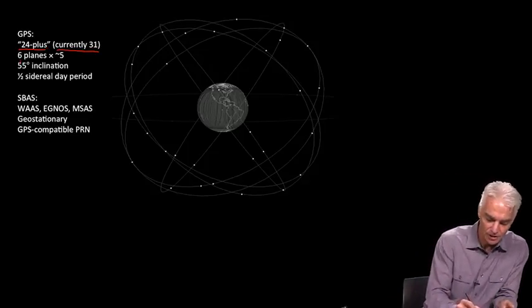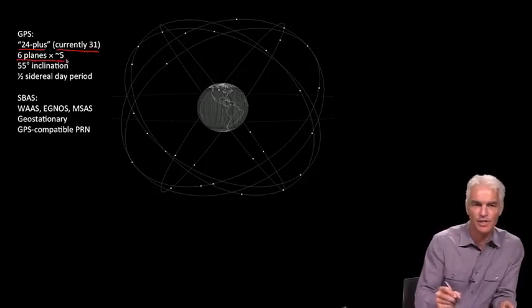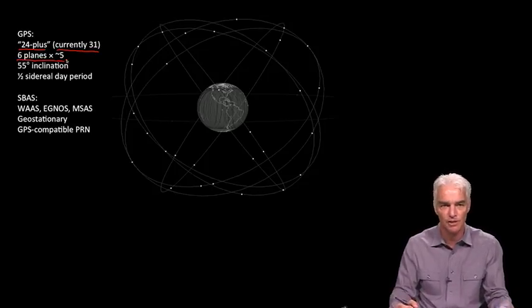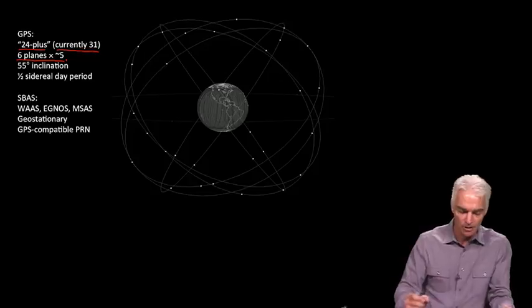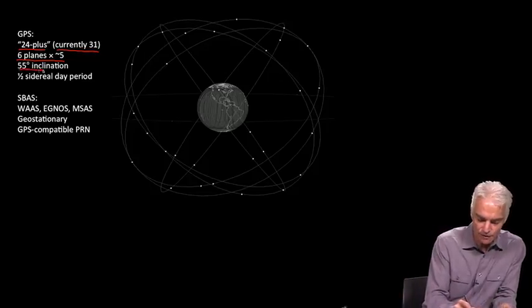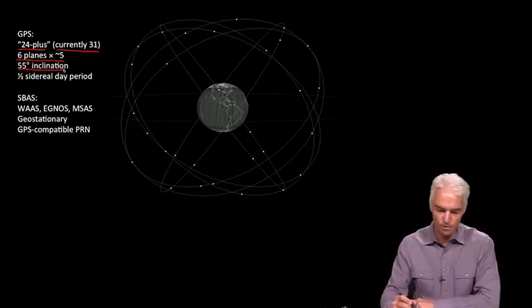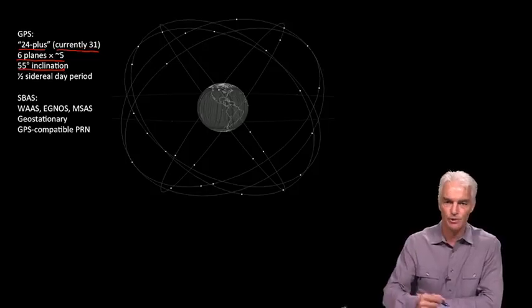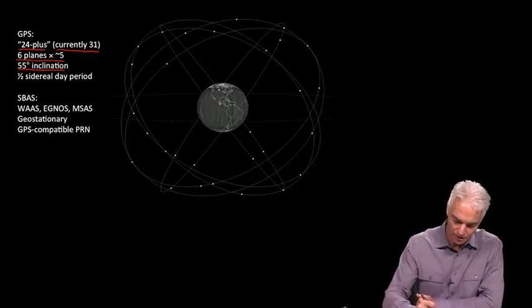So that's the number of satellites. There are six planes, about five satellites in each plane—of course one of them has to have six to get 31. Each plane is inclined at 55 degree inclination, and the consequence of that is that as the satellite orbits and the Earth rotates underneath, the highest point on the Earth that a satellite can get to while still directly overhead is 55 degrees latitude and minus 55 degrees latitude.